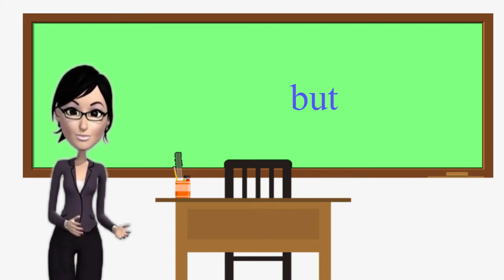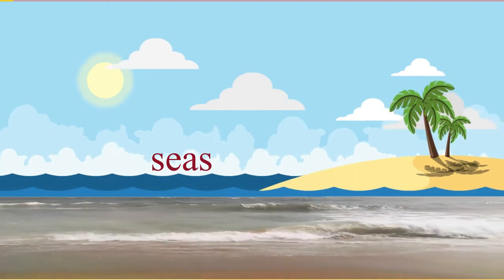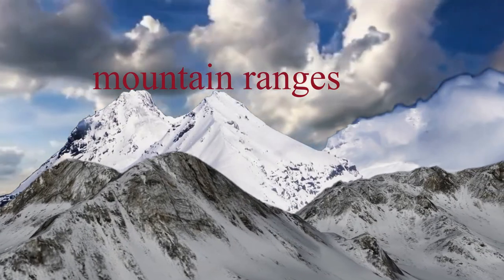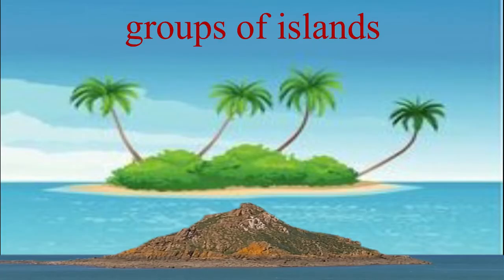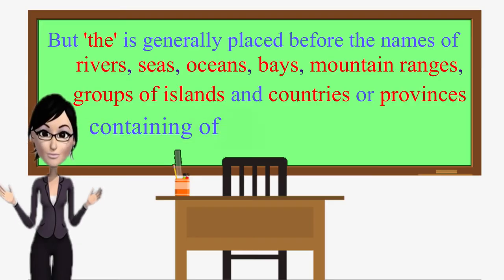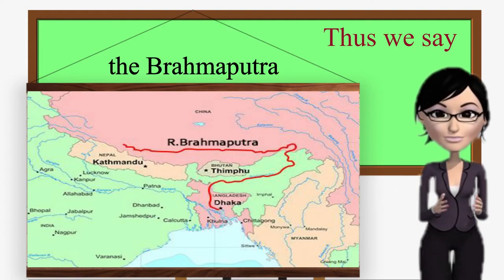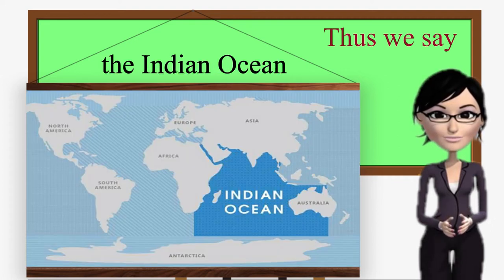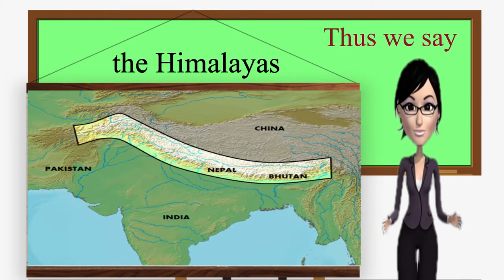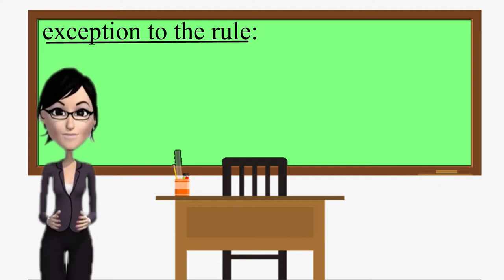But 'the' is generally placed before the names of rivers, seas, oceans, bays, mountain ranges, groups of islands, and countries or provinces containing an adjective or a noun. Thus, we say: the Brahmaputra, the Mediterranean Sea, the Indian Ocean, the Bay of Bengal, the Himalayas, the Andaman and Nicobar Islands, the United States.